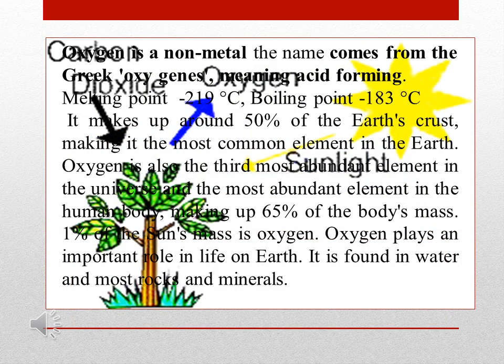Oxygen is a non-metal. The name comes from the Greek oxygens, meaning acid forming. Melting point minus 219 degrees Celsius, boiling point minus 183 degrees Celsius. It makes up around 50% of the Earth's crust, making it the most common element in the Earth.